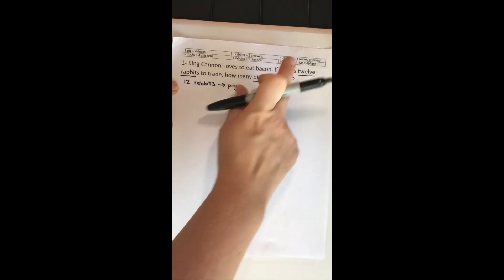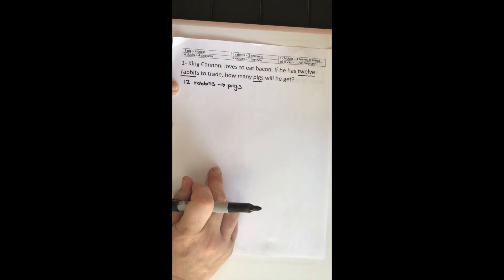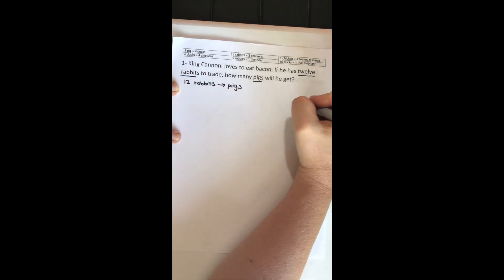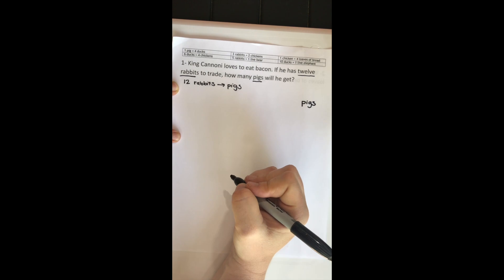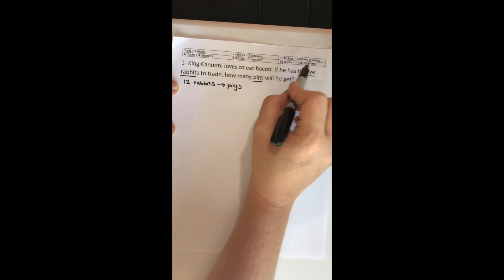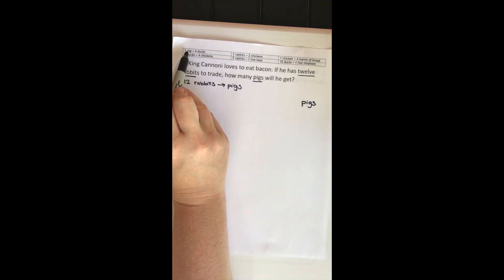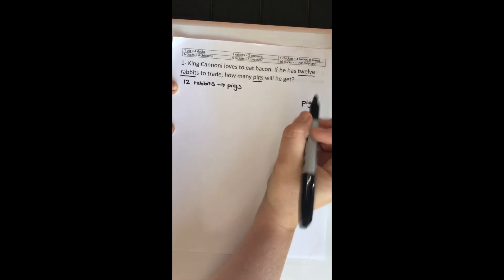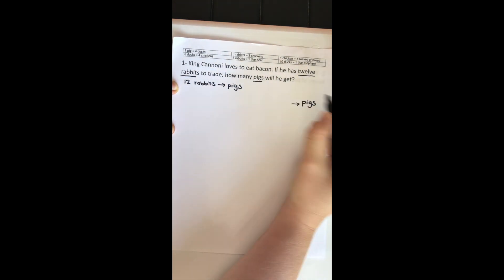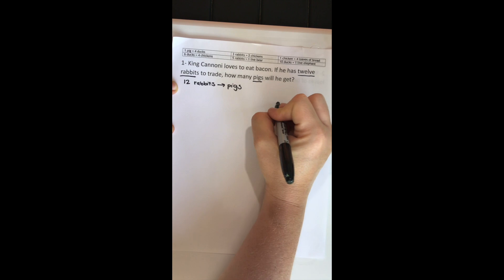Now our conversion factors are all listed up here. We need to figure out a path that will help us get from rabbits to pigs. To do this, I like to begin with the end in mind. I know that I need to get to pigs, and I'm going to start over here on the right side of the page. What kinds of things can get me to pigs? If I'm looking at my conversion factors, ducks can get me to pigs, and that's it. So I know before I get from rabbits to pigs, I'm going to have to go through ducks first.